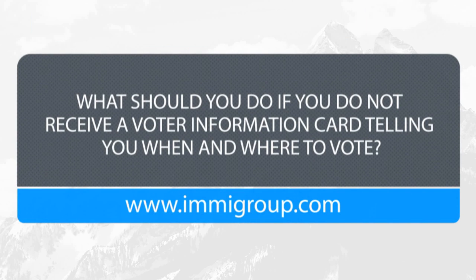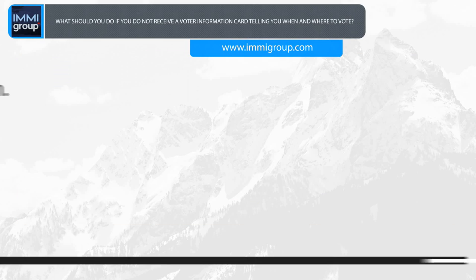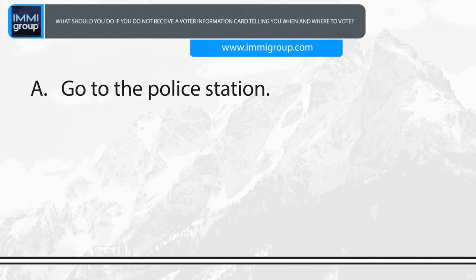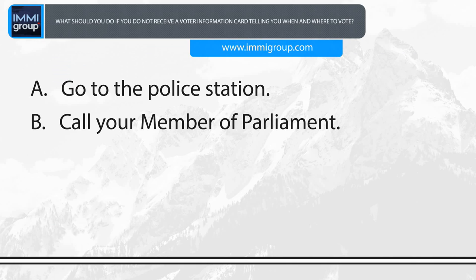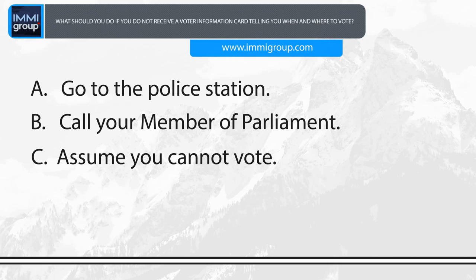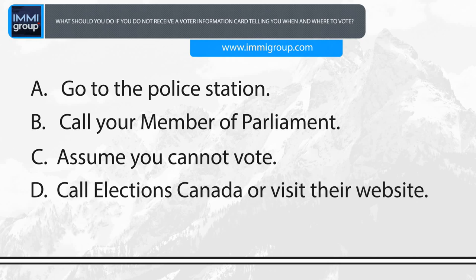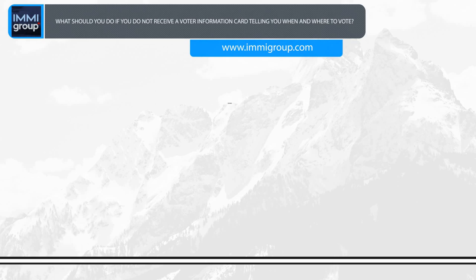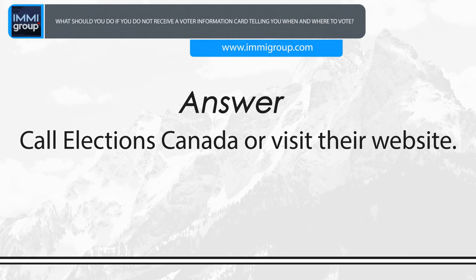What should you do if you do not receive a voter information card telling you when and where to vote? A. Go to the police station. B. Call your Member of Parliament. C. Assume you cannot vote. D. Call Elections Canada or visit their website. Answer: Call Elections Canada or visit their website.